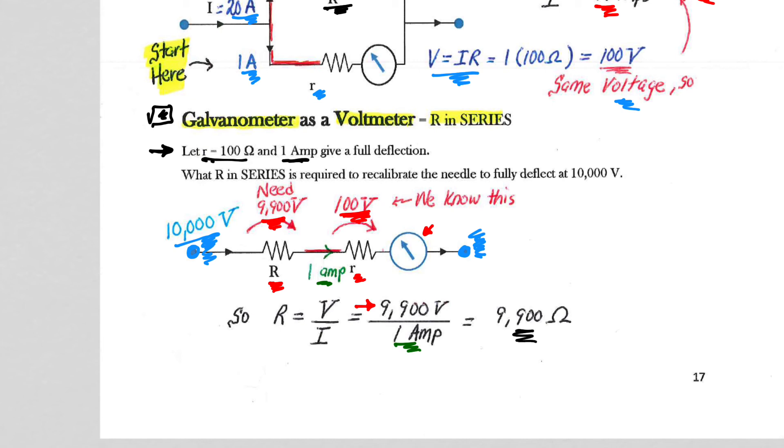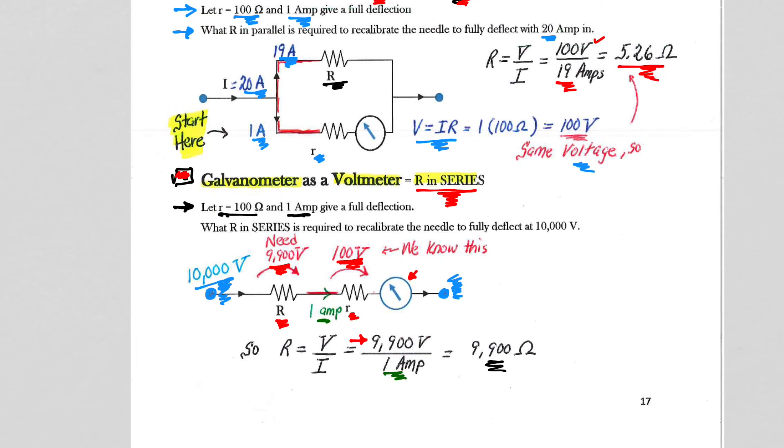As far as solving galvanometer problems, it is vital that you know that galvanometers as voltmeters, you will be connecting the r in series to split the voltage up. On the top example, we were splitting the current up, now we're splitting the voltage up to get the galvanometer to operate as a voltmeter.